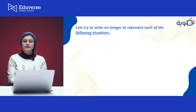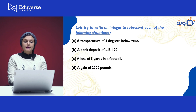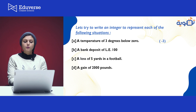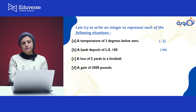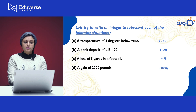Now let's try to write an integer to represent each of the following situations. Number A: a temperature of three degrees below zero — below zero, so it's going to be a negative number, negative three. Number B: a bank deposit of 100 pounds — I'm adding money to the bank, so it's a positive number, positive 100. Number C: a loss of five yards in football — loss means to decrease, so it's negative five. And the last one: a gain of 2,000 pounds — that means more money, so positive 2,000.